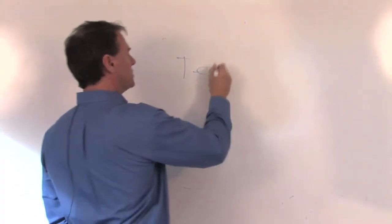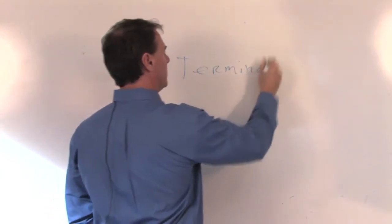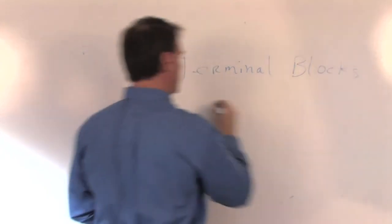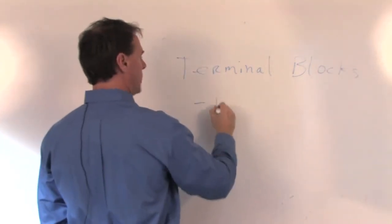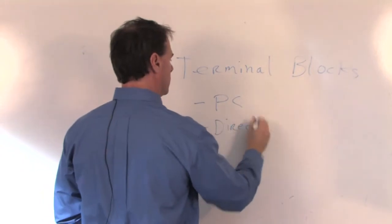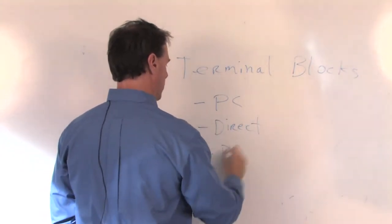Terminal blocks. All a terminal block is can be mounted in several ways: printed circuit board mounted, direct mounted, or DIN rail mounted.